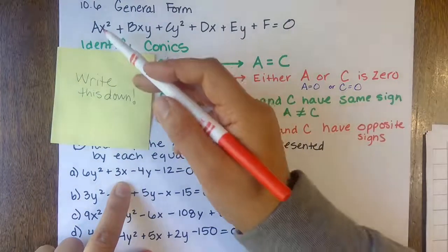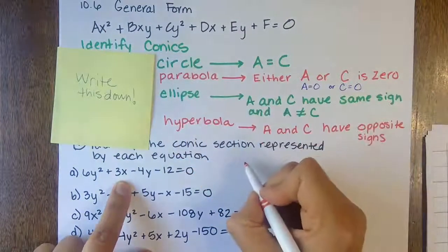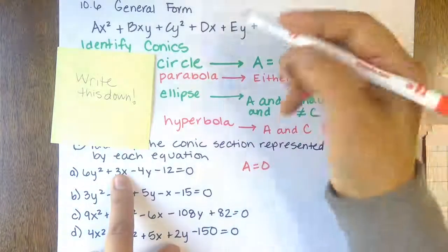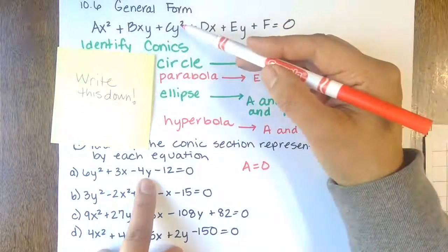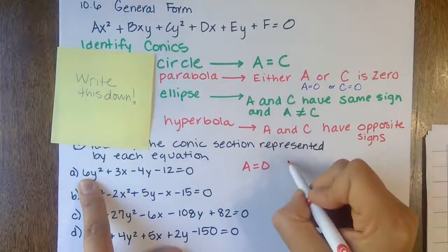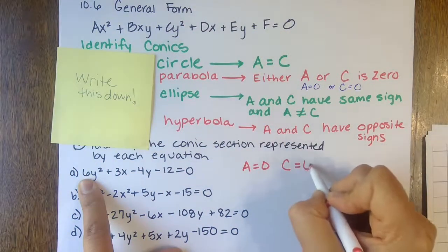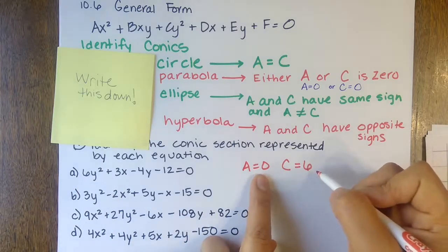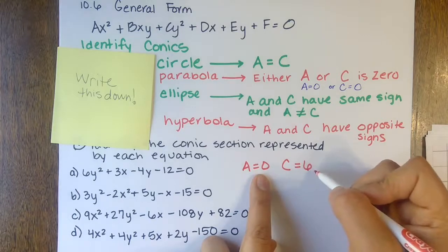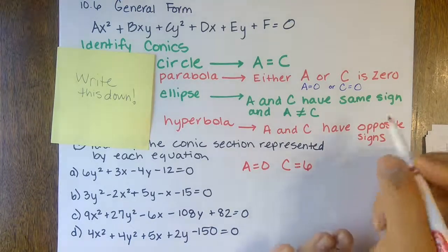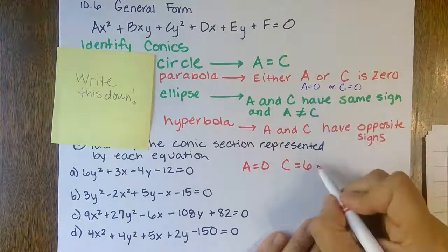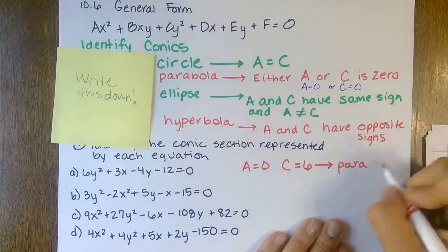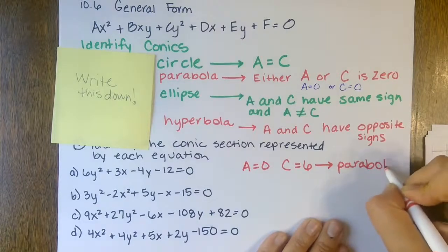The A value is the number in front of the x² term — there is no x² term, so our A value is zero. Our C value is the number in front of the y² term, so C is six. Since A equals zero and C equals six, one of them is zero — it is a parabola.